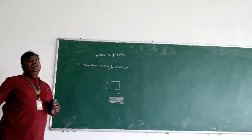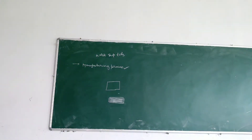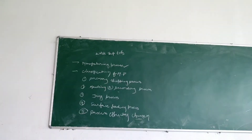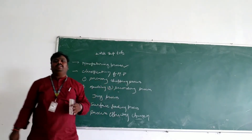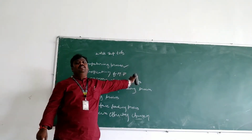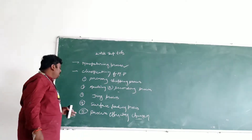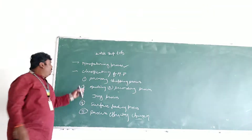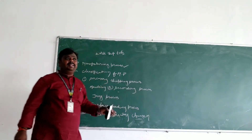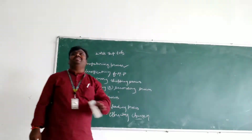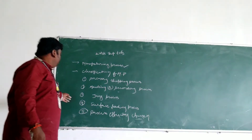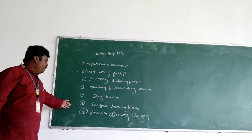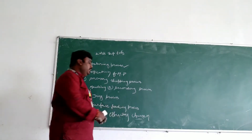This is the manufacturing process. Method operations are there in that position. So you can calculate into manufacturing process. You have a total of five classifications of them. One is manufacturing operation, second is joining process, third is subtraction shape process, and fourth is process affecting and changing the properties.